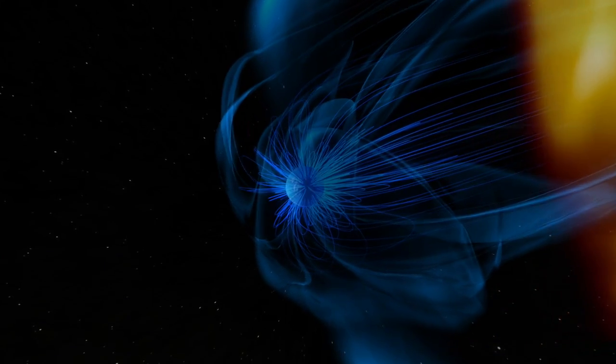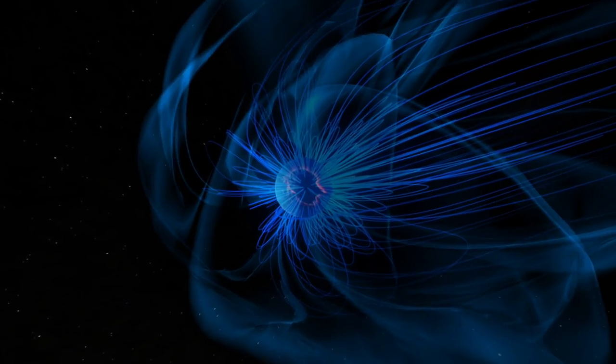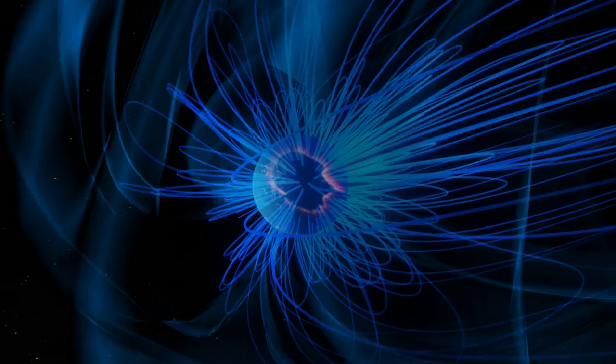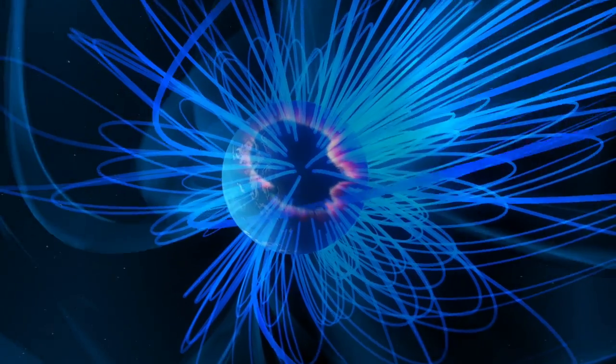This weaker magnetosphere's polar caps were far wider than they are now. This let particles from the active sun seep into Earth's nitrogen-rich atmosphere.